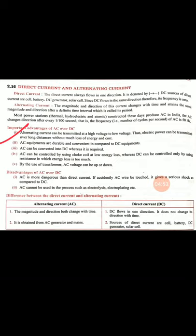If we transmit at high voltage, we have less loss of energy. What is the loss of energy? Some electric energy, when passing through wires, warms the wire — meaning electric energy converts into heat energy, which is not useful to us and is thus wasted. So transmitting at high voltage reduces this loss. The cost also becomes very low. Direct current cannot be transmitted this way.